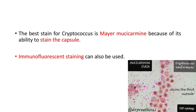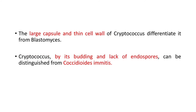The best stain for cryptococcosis is Mayer's mucicarmine, because of its ability to stain the capsule. Immunofluorescent staining can also be used. This mucicarmine-stained picture of Cryptococcus neoformans stains both the organism and the capsule. The large capsule and thin cell wall of Cryptococcus differentiate it from Blastomyces; Cryptococcus can be distinguished from Coccidioides immitis by its budding and lack of endospores.